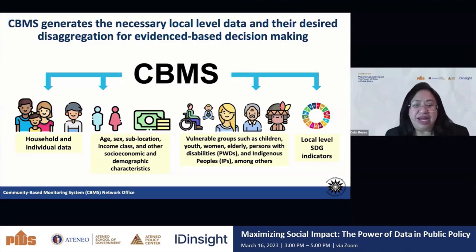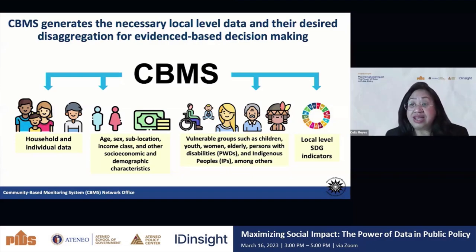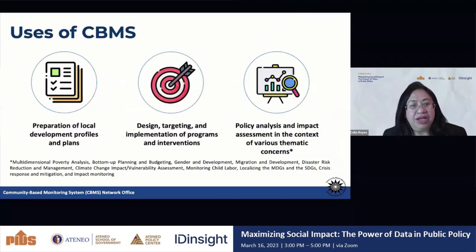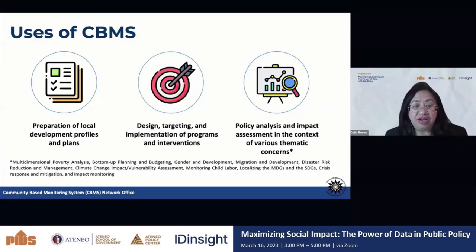CBMS generates the necessary local-level data with all the necessary disaggregation for evidence-based decision making. Because it's based on a census of households, you can generate household and individual data disaggregated by age, sex, income class, and other socioeconomic and demographic characteristics. You can also generate data for specific vulnerable groups such as children, youth, women, elderly, persons with disabilities, and indigenous peoples. More recently, we've been using CBMS to track SDGs at the local level — you can actually see who is being left behind. LGUs mainly use it for local development profiles, program design and targeting, and policy analysis and impact assessment.